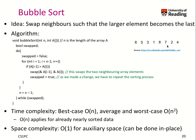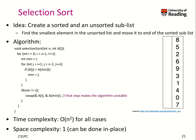We basically sort a smaller array each iteration. The best case time complexity is O(n), and the average and worst case is O(n²). O(n) applies for already nearly sorted data because you go over it once and find it's in order. In terms of space complexity, we don't need much auxiliary space — it can be done in place, so we have O(1) auxiliary space, which is quite good.